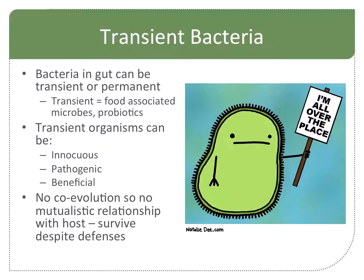Within our microflora, we've got our transient bacteria and our commensals. Our transient bacteria tend to be the bacteria we associate with food — that's where our probiotics come in as well. They can be innocuous, pathogenic, or beneficial. The transient bacteria are not there for a long time; your immune system pretty much wipes them out because there was no co-evolution, so there's no mutualistic relationship — unless it's a probiotic that you co-evolved with, in which case it'll survive host defenses.